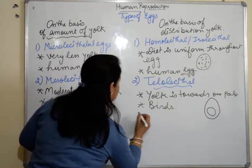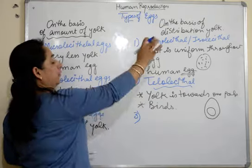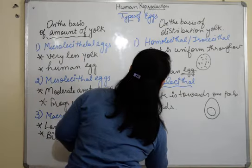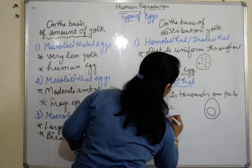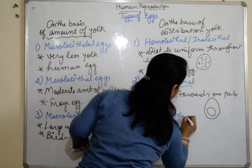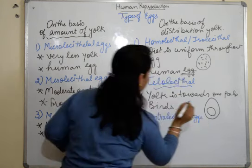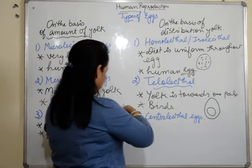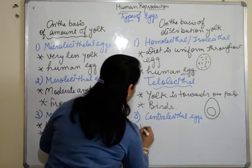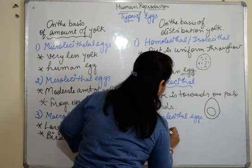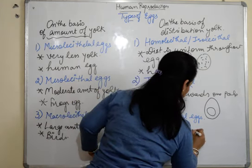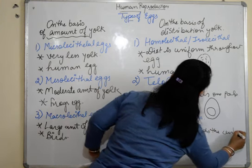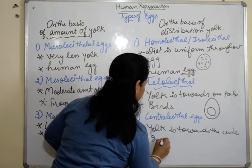We have homo lecithal eggs, telolecithal eggs, and then centrolecithal eggs. In centrolecithal eggs, the yolk is concentrated towards the center of the egg. An example is found in insects.